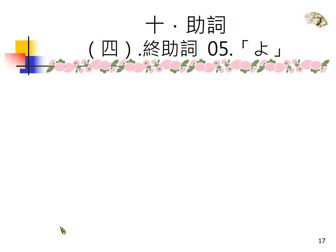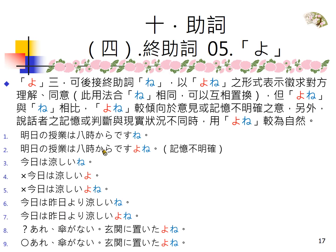在走廊上跑步，然后撞到了拄着拐杖的老师，把老师给撞倒了，老师骨折了——比喻有点过头了。我们往下看，下一个よね的用法，它是要接在ね的前面。这我们上一次讲过了，要加在ね的前面，记忆不明确的时候可以加よね。